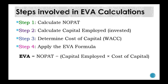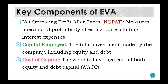The steps involved in EVA calculation are: first, calculate the net operating profit after taxes (NOPAT); second, calculate the capital invested by the organization; third, determine the weighted average cost of capital (WACC); and finally, apply the EVA formula: EVA = NOPAT − (Capital Employed × Cost of Capital). NOPAT represents the company's operating profit after taxes excluding financing costs. Capital employed is total capital raised through equity and debt. WACC represents the minimum return required by investors.